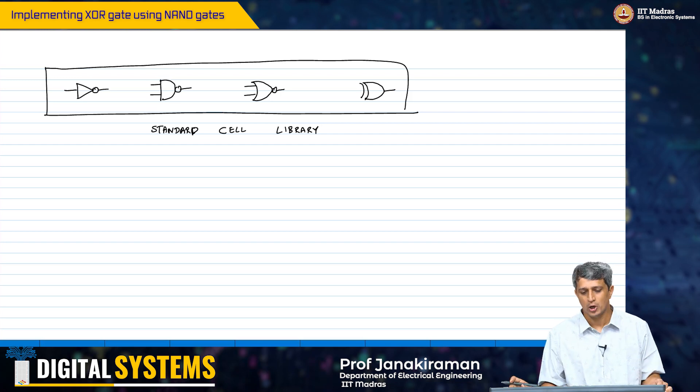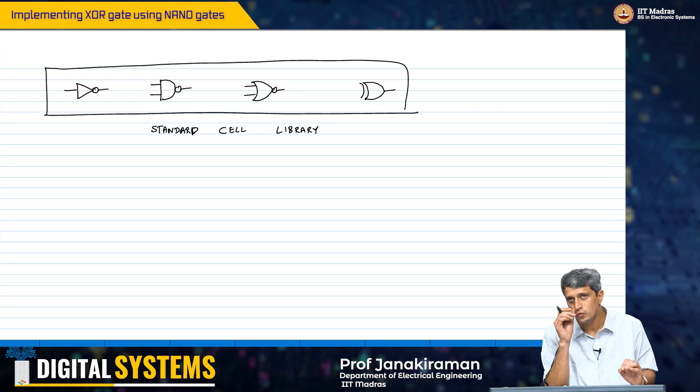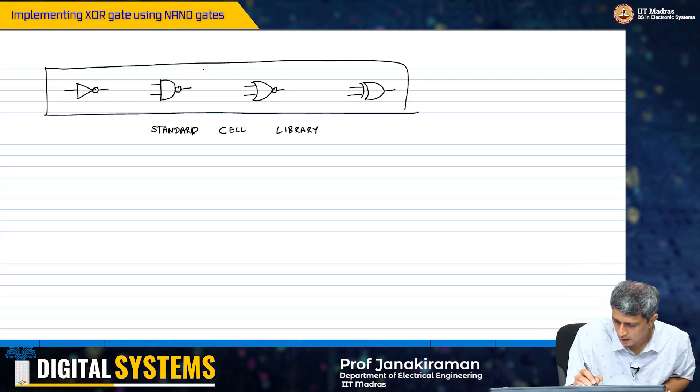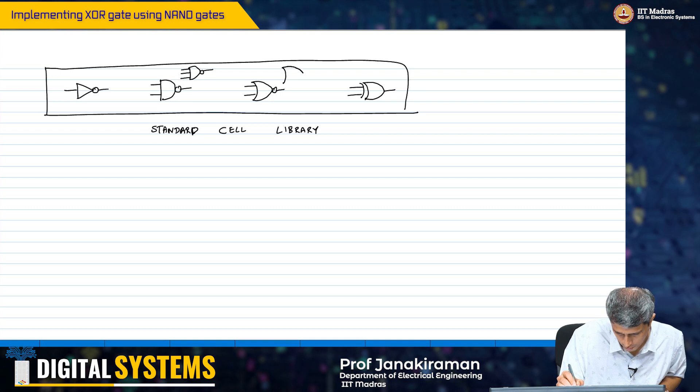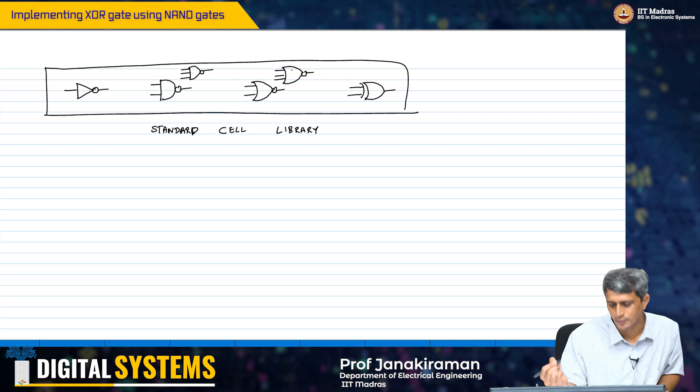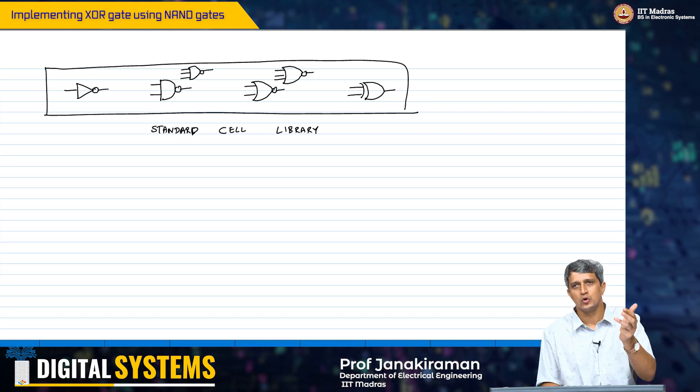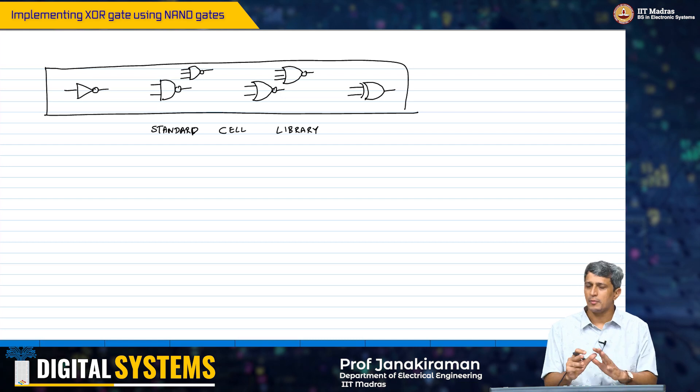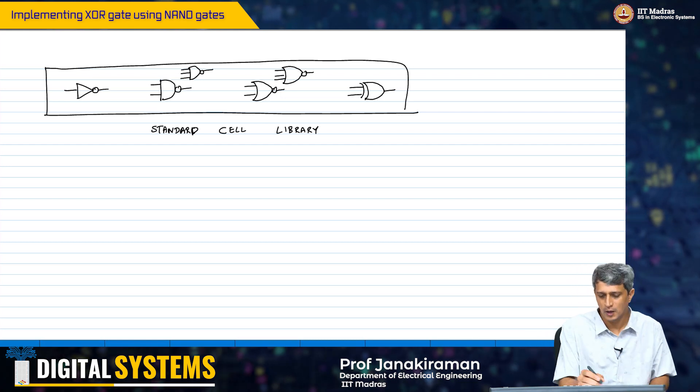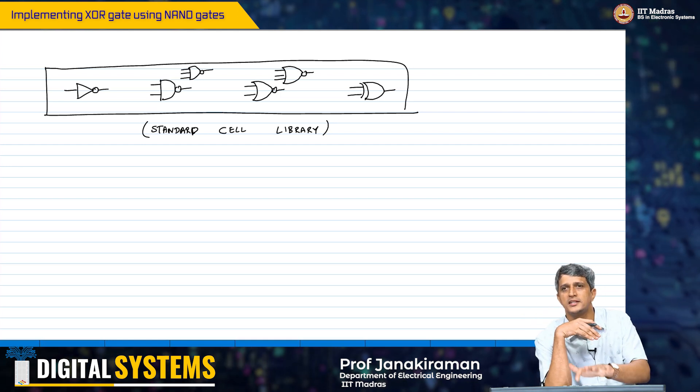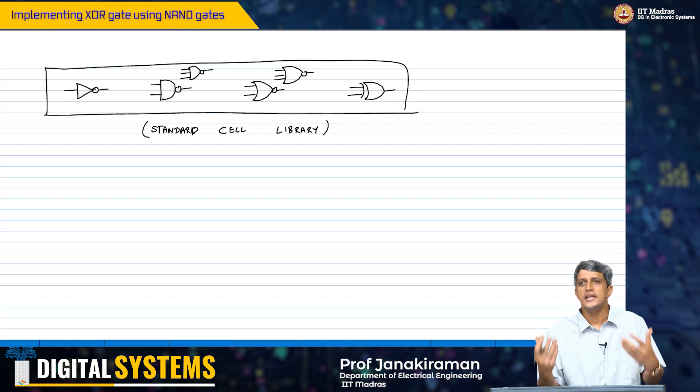It is called a standard cell library because the elementary logic gates that are available to you are some fixed set of gates like this. In this case: inverter, NAND 2, NOR 2, or they might also provide NAND 3, NOR 3. Usually you will be provided with logic gates up to 4 inputs: NAND 2, NAND 3, NAND 4, NOR 2, NOR 3, NOR 4. XOR 2, yes maybe, and there might be more sophisticated cells available. Whatever design I now give you, you have to somehow find a way to implement it with only these gates and hopefully with the least gate count.